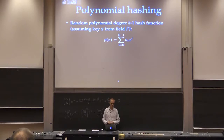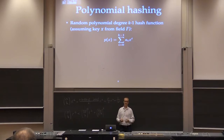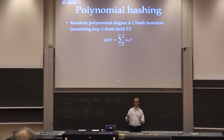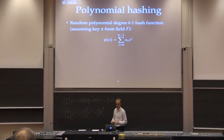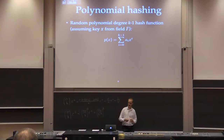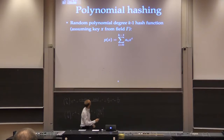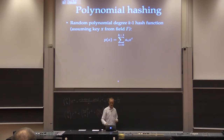What we do is look at the inputs as numbers in some field — you can think of it as a number modulo p for some prime p. Then we take a random degree k-minus-1 polynomial. We simply choose random coefficients a0, a1, up to a_{k-1}, and our hash function just evaluates this polynomial on the input key.